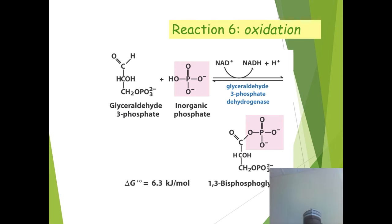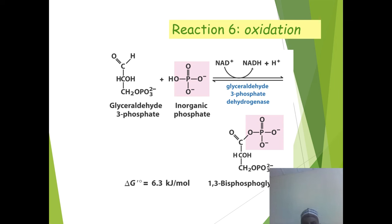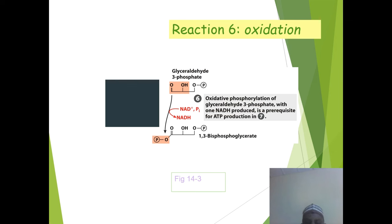Reaction 6: glyceraldehyde-3-phosphate plus inorganic phosphate, in the presence of NAD+, is catalyzed by glyceraldehyde-3-phosphate dehydrogenase to produce 1,3-bisphosphoglycerate and NADH. The delta G standard is minus 6.3 kJ per mole. This open-chain diagram shows NADH being involved in the reaction.